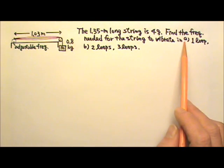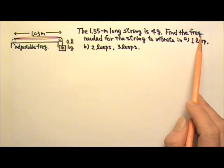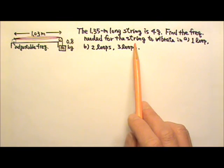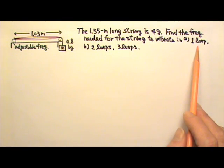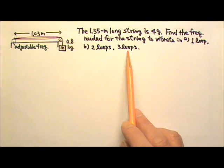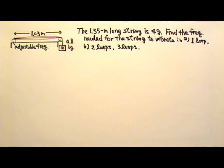Part A: Find the frequency needed for the string to vibrate in one loop. Part B: Find the frequency needed for the string to vibrate in two loops and the frequency for three loops.